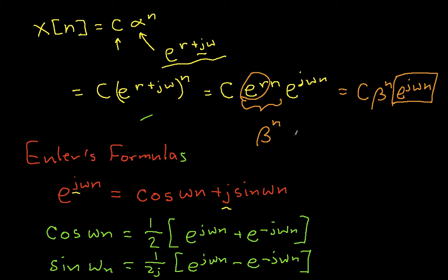So what this means then, this fact that e to the j omega n can be broken into a real part, which is a cosine, and an imaginary part, which is a sine. If I plug this back in here, what it means is that my samples, x of n, are going to basically be this exponentially weighted guy, this beta to the n, times a cosine real part and a sine imaginary part. So this complex exponential actually has sinusoidal components. The cosine real part and the sine imaginary part.